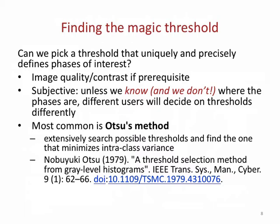Finding the magic threshold typically doesn't work. There's a lot of work on picking a threshold that uniquely and precisely defines phases in an image just given the statistics, but it's subjective unless we know where the phases are. There's something called OTSU's method where you select the threshold to optimally separate two phases in a statistical sense. That sometimes works well, sometimes doesn't. If you have a lot of noise, no matter what the thresholding is, it's still thresholding — picking the magic one will not get you far.